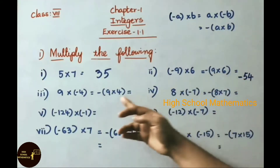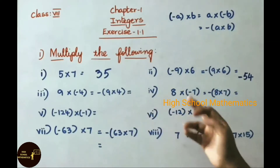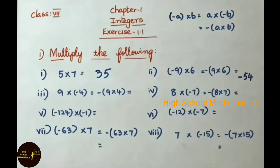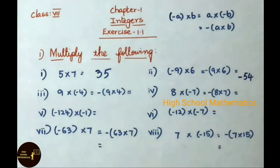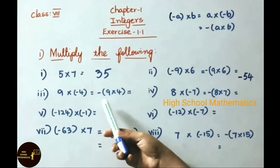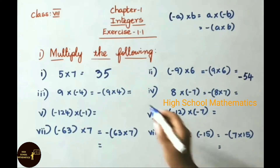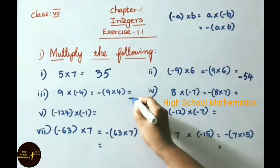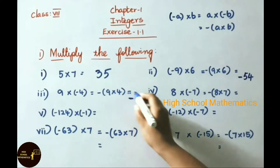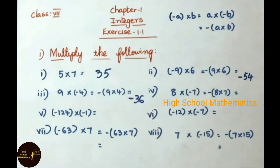Based on that same model, we solve the third sum: 9 into minus 4, that equals to minus of 9 into 4, that equals to minus 36. So the answer is minus 36.